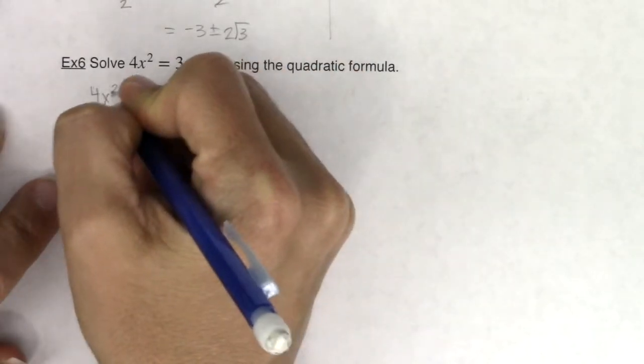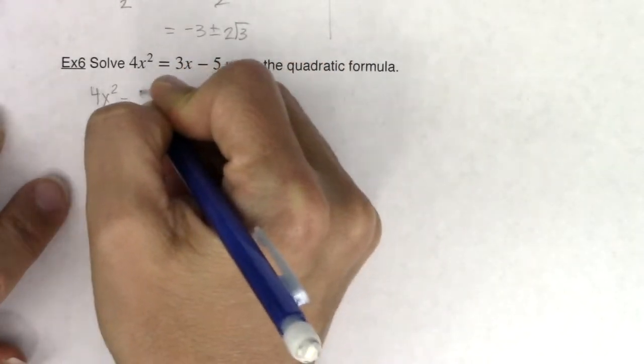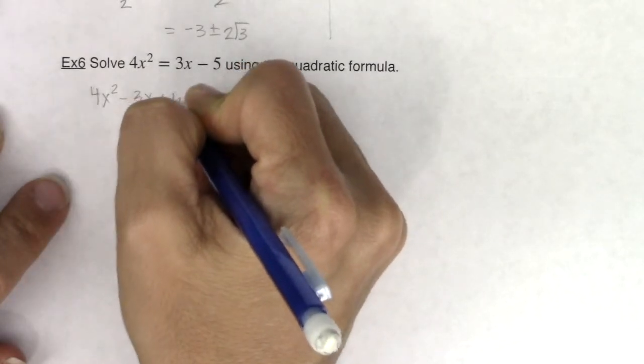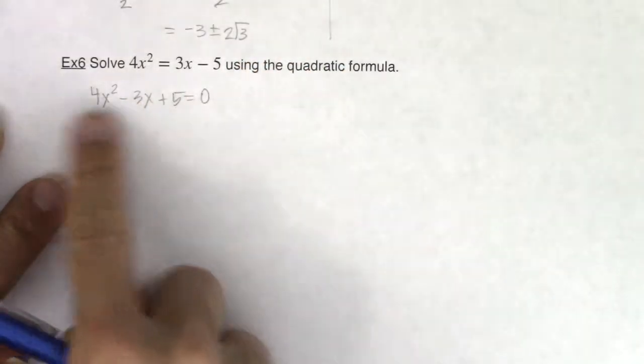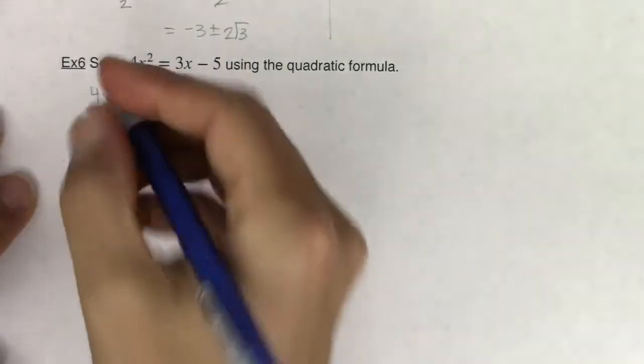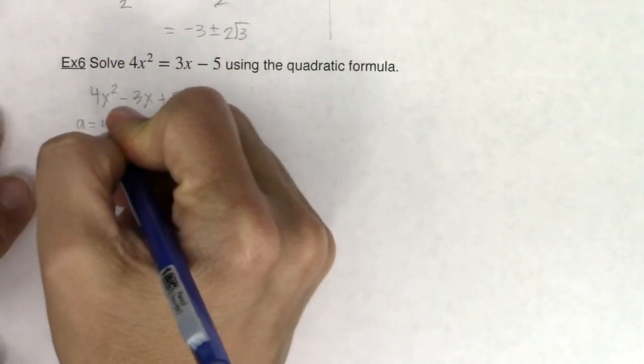So when I move the 3x and the 5 over, I have 4x squared minus 3x plus 5 would be equal to zero. So I have my quadratic equation in standard form set equal to zero. I can now identify a, b, and c.